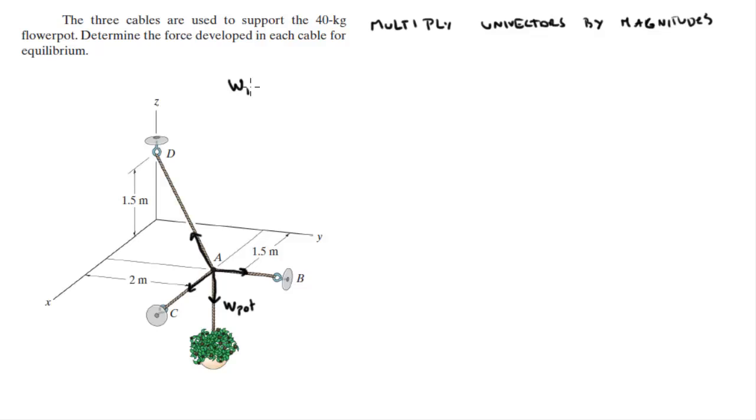The flower pot weighs 40 pounds, so the weight of the flower pot can be calculated by doing 40 pounds times the acceleration of gravity which is 9.81 meters per second squared, and it gives you 392.4 Newtons. That's the weight of the pot.